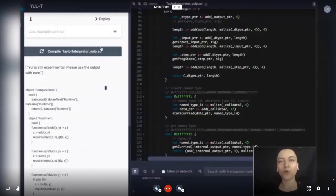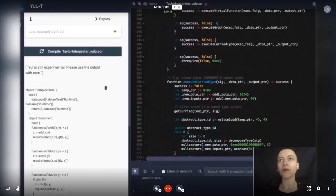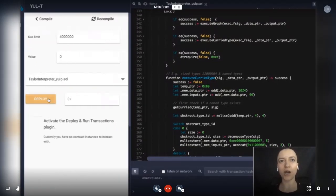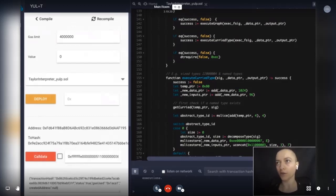This is a modified version of the Yul+ extension for Remix, and this is the Taylor graph interpreter contract, which I will be deploying. Now we are going to insert the definition for the uint type and then the definition for the simple array type.